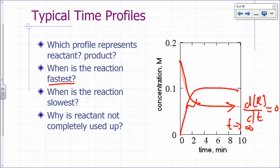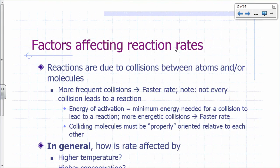When is the reaction fastest? Initially. And when is it lowest? At equilibrium, as T approaches infinity. Why is the reactant not used up? Because in general, reactions are reversible — they do not necessarily go to completion. And if you have two reactants, even if the reaction does go to completion, typically one reactant would be consumed first — the limiting reactant — and you'll have an excess of the other.